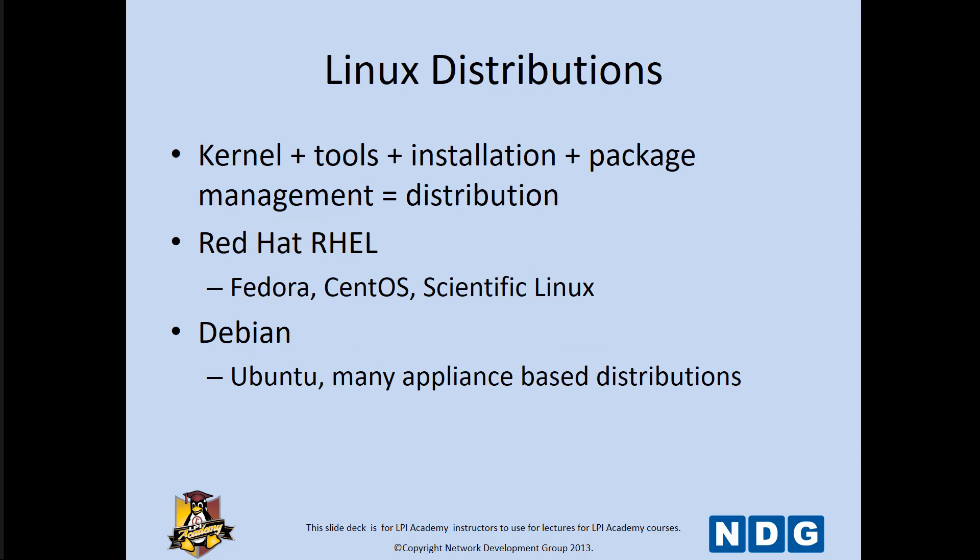In order to form the distribution, it's the kernel, the tools, the installation, packages, and the management that will form the distribution. Red Hat is one type — they form things like Fedora or Scientific Linux. There's another major flavor called Debian, which is more Ubuntu. More and more organizations are using a Debian-based distro, and a lot of appliances use it just because it's more user-friendly.